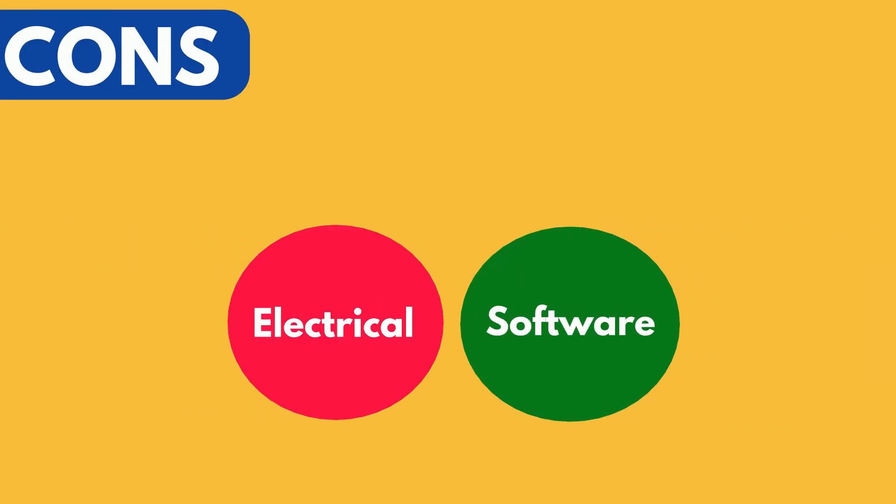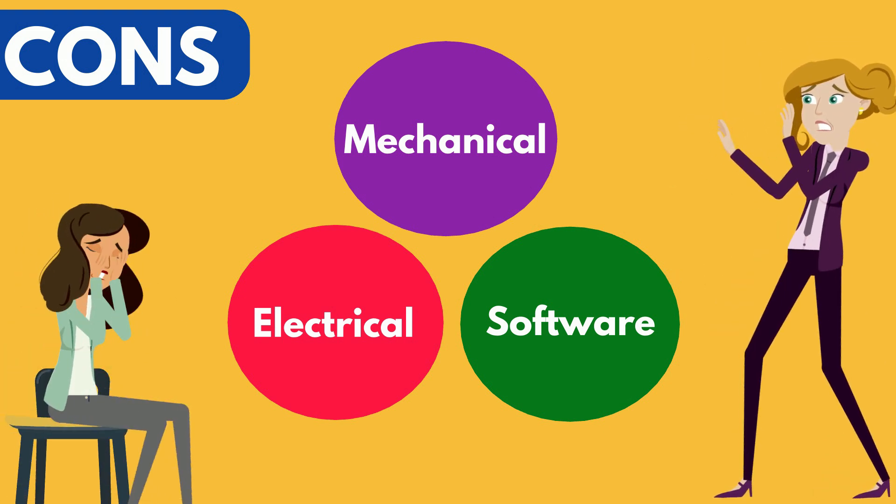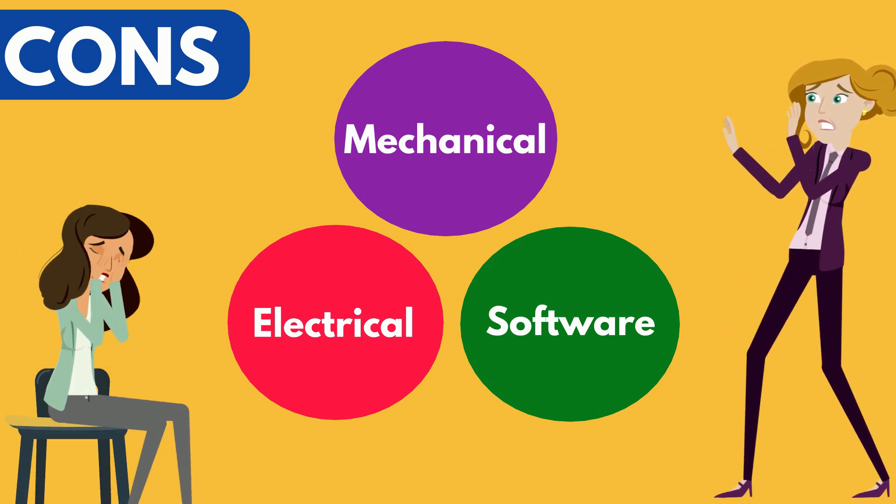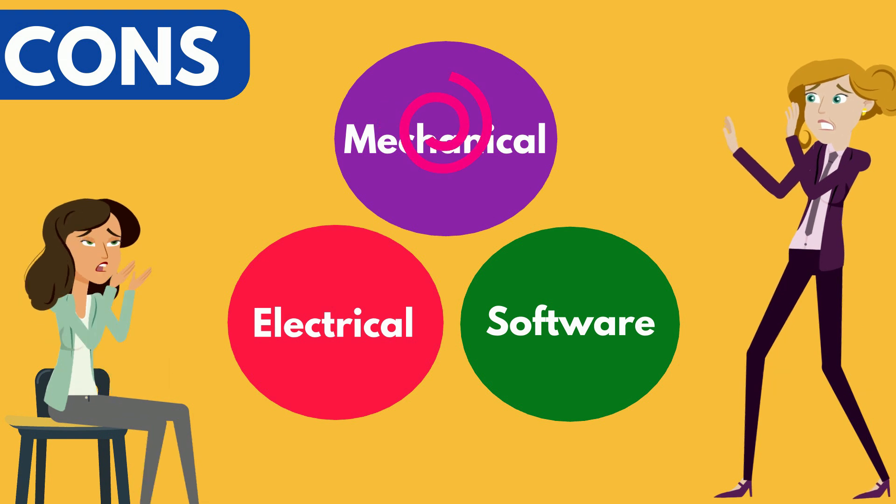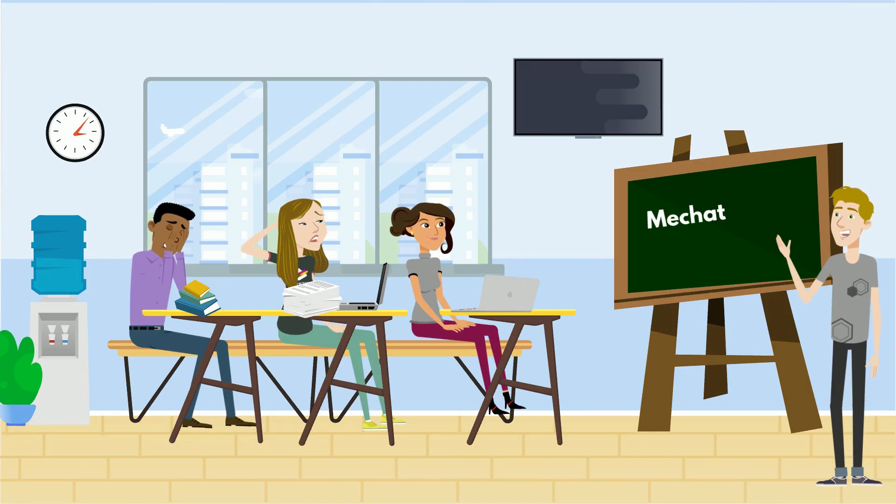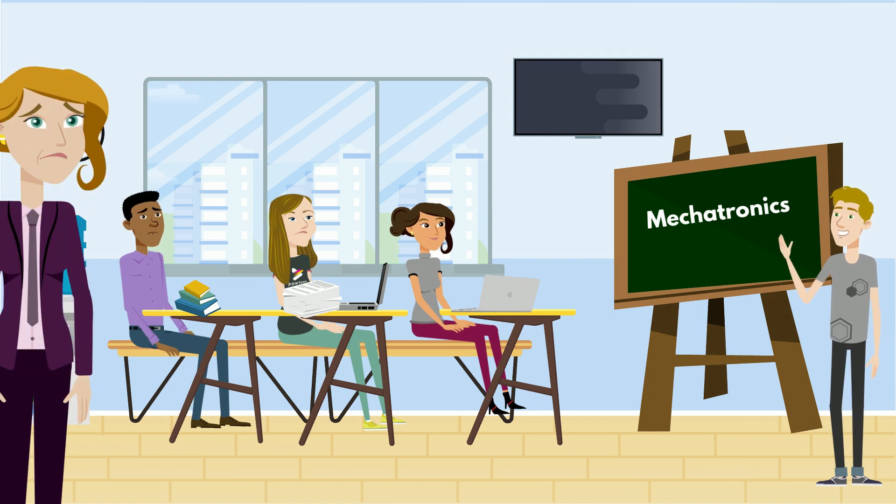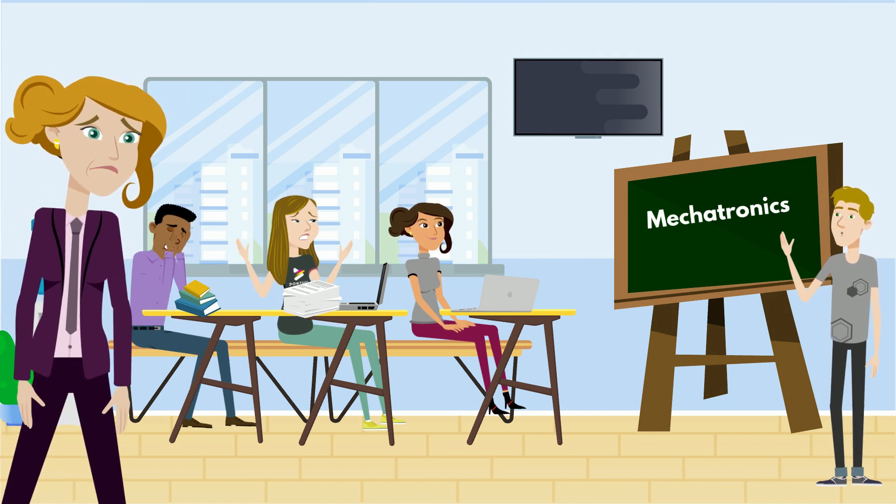Kicking it off with the cons, there are a lot of different areas of technology that you have to learn to become a reliable mechatronics engineer. As discussed earlier, you still will most likely concentrate in only one field, but taking engineering classes in three different fields of engineering is really tough. There are no other ways around it.